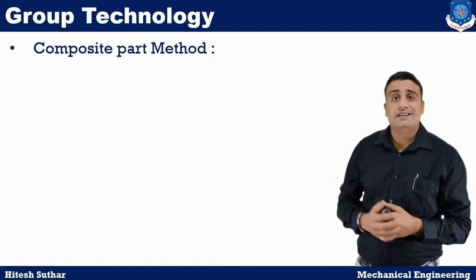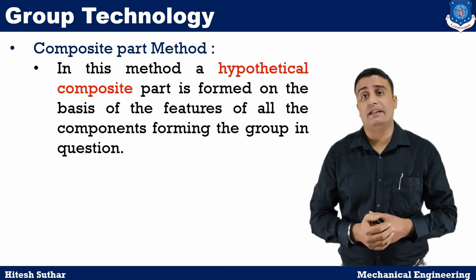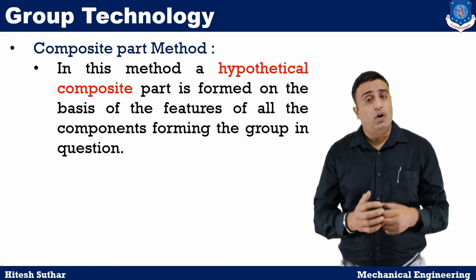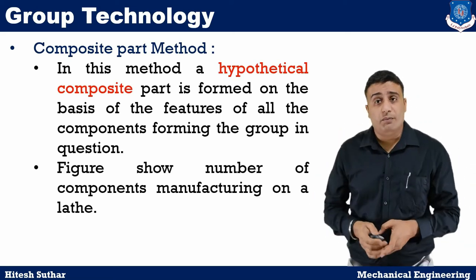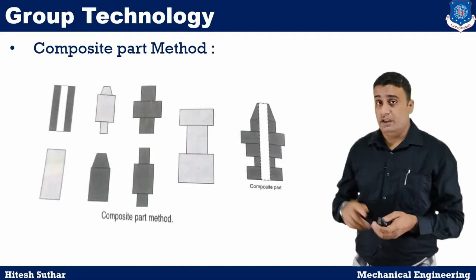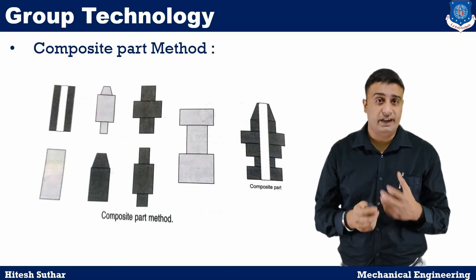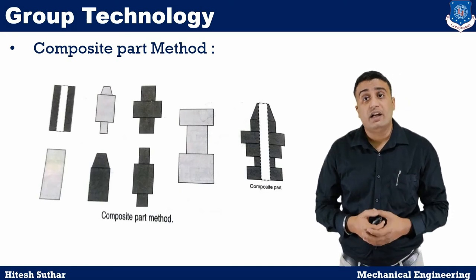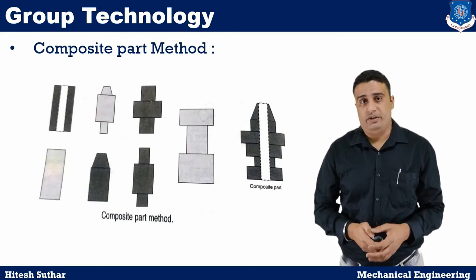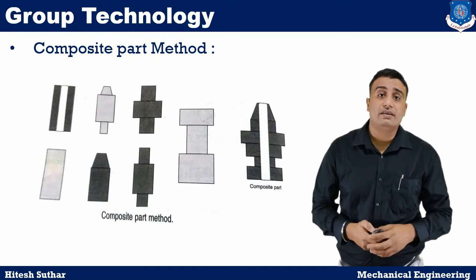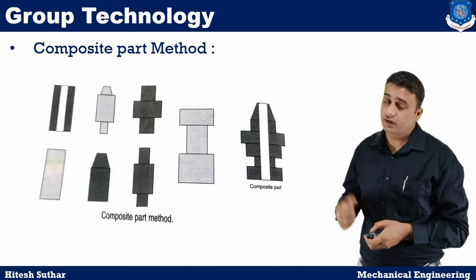Moving on to the next method, that is the composite part method. In this method, a hypothetical composite part is formed on the basis of the features of all the components forming the group in question. Figures show the number of components manufactured on a lathe. The various operations include setting the length, facing, turning, grooving, drilling, boring, reaming, counter boring, chamfering, etc. Each job does not need all the operations. An imaginary component is composed which involves all the operations needed for the group, as shown in the figure.